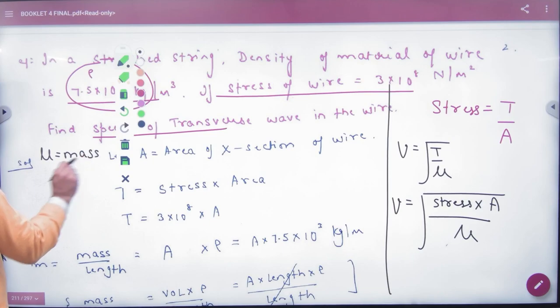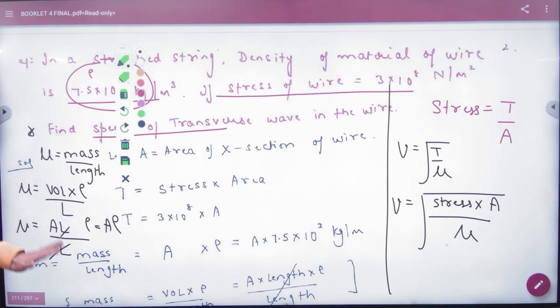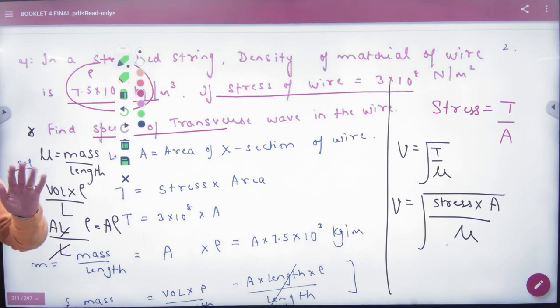Mu ka matlab kya hota hai: mass per unit length. Yeh note karehen please, formula booklet important hai. Mass kya hai: volume into density by length. Volume kya hai: area into length times density by length. To kya ban gaya: area into density. Bahut jagah shortcut hai, mu ka matlab area into density. Area into density mu hota hai.